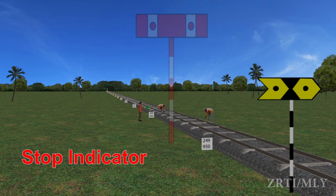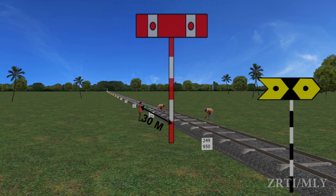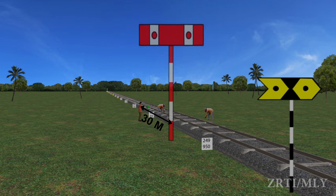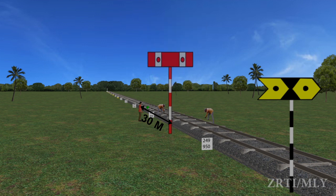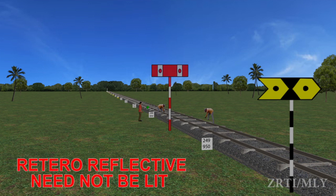Stop Indicator: It is a rectangular board painted red with white vertical bars. It displays two horizontal red lights by night and is placed at 30 meters from the actual work spot. Reflective type indicators need not be lit during night time.